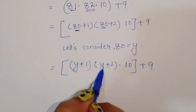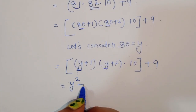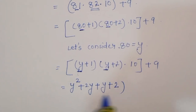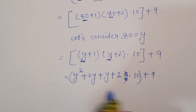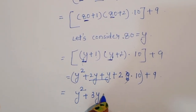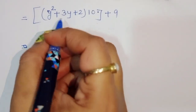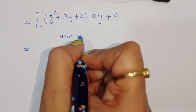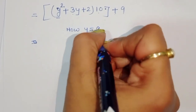Now expanding y plus 1 times y plus 2: y multiplied by y gives y squared, then plus 2y plus y plus 2, which is y squared plus 3y plus 2. So we have y squared plus 3y plus 2, times 10 plus 9. We already considered y equal to 80, so the value of y is 80.